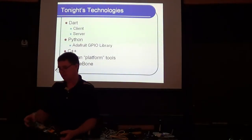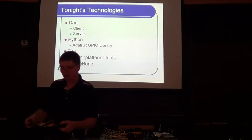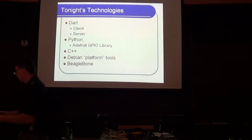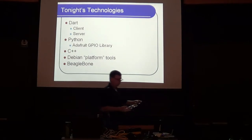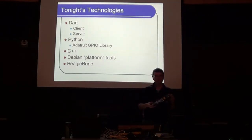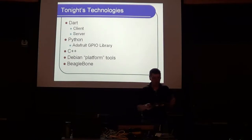This particular one has essentially a motion sensor, buzzer, beeper, and LED lights. You install the software on the BeagleBone and it can be C++, Python, or as we'll see, Dart. You get the applications running on the board and then you can connect to it via SSH.